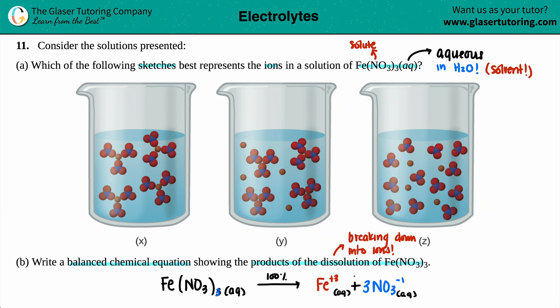Now we're going to use that information to find out which one of these is the correct one. Now, we know that the Fe(NO₃) is no longer going to exist. It is going to be broken down. It's going to be dissolved into its ions.